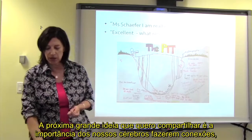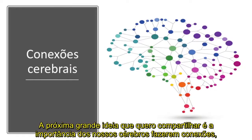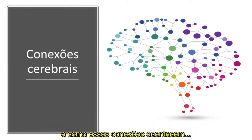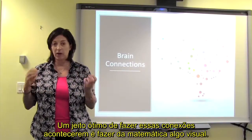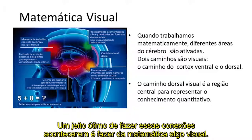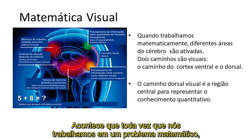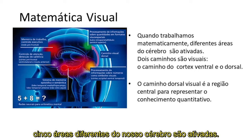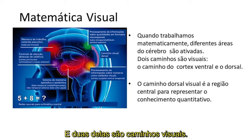The next big idea is the importance of our brains making connections. One really great way to have brain connections is by making math visual. It turns out that every time we work on a math problem, there are five different brain pathways involved, and two of them are visual pathways.